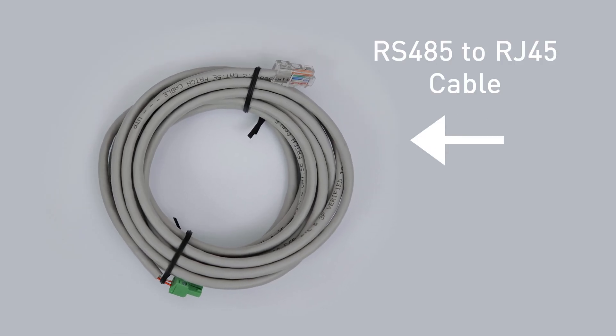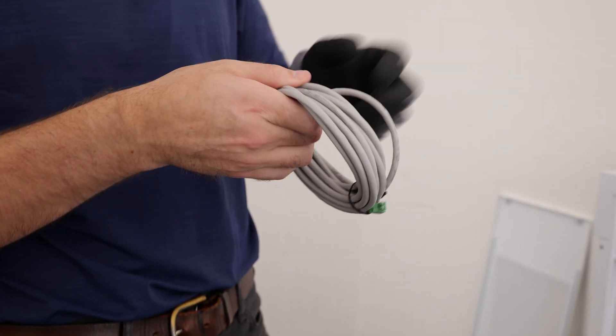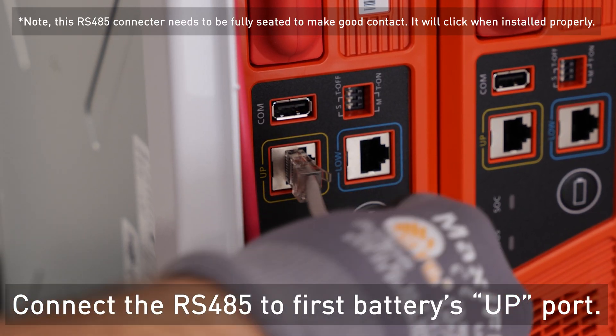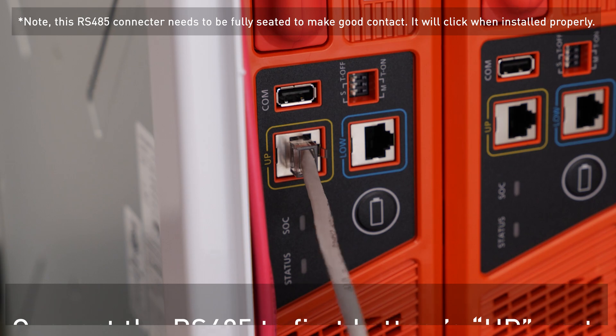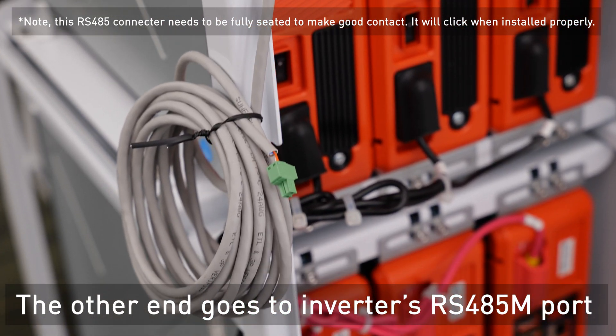Connect the supplied RS-485 to RJ-45 communication cables on the first batteries up port and route this cable back to the inverter where it is installed on the RS-485M port.